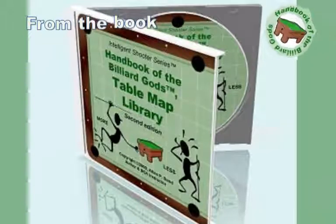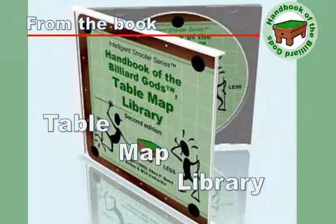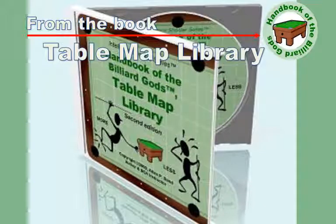This is one of the thousands of setups in the Table Map Library, an HTML book that describes cue ball patterns on a 9-foot table. These patterns are very helpful when you play one-pocket matches and 9-ball competitions.